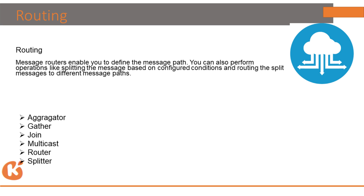Now we come to CPI palettes. In CPI we mostly convert data through palettes. CPI has different palettes like router, aggregator, gatherer, join, multicast, splitter, and filter.